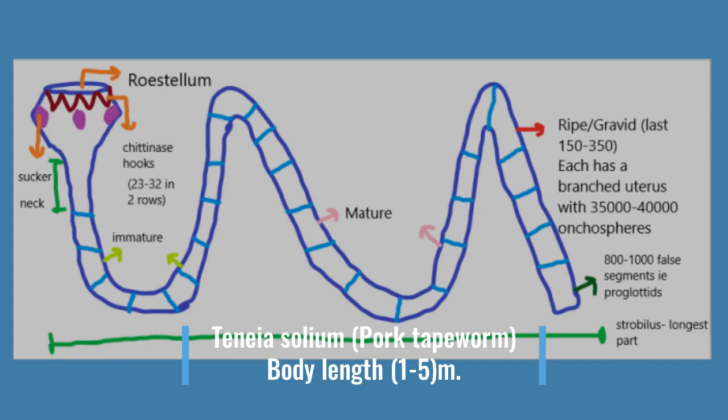Think about it — if an organism is 5 meters long living inside your body. Now let's go to the rostellum and hooks. The hooks are made of chitin and are arranged in two rows, with a total count of 22 to 23. There are also suckers. These three structures — rostellum, hooks, and suckers — function for attachment when the tapeworm is present in our small intestine, keeping it attached to the intestinal wall.